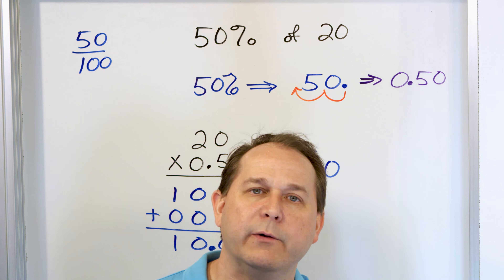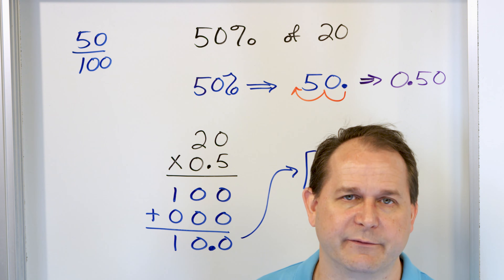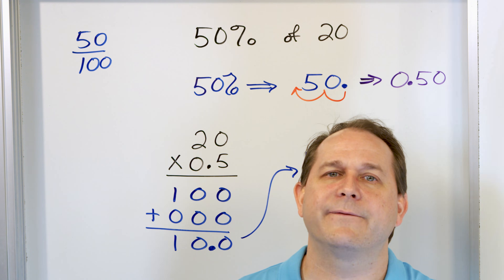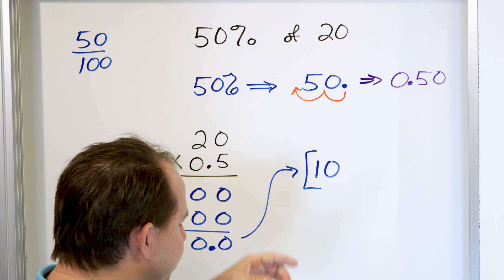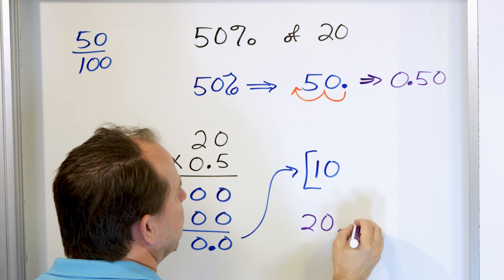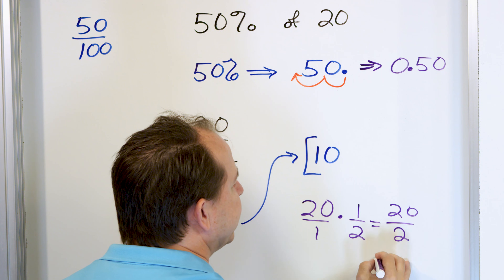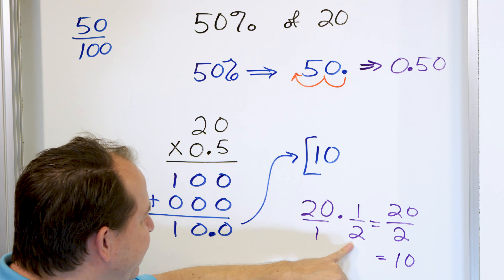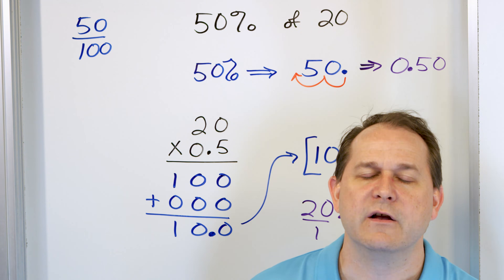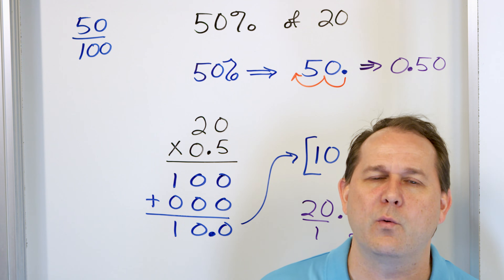So you have freedom when working with percents. You can multiply by the decimal equivalent to calculate a percentage. We also know that you can multiply by the fraction equivalent. For example, 20 times one-half — 20 times 1 is 20, 20 divided by 2 is 10. Whether you multiply by the fraction equivalent or the decimal equivalent, the answers will be the same. In these lessons, we'll be multiplying by the decimal equivalent, but know you could do it the other way with fractions.